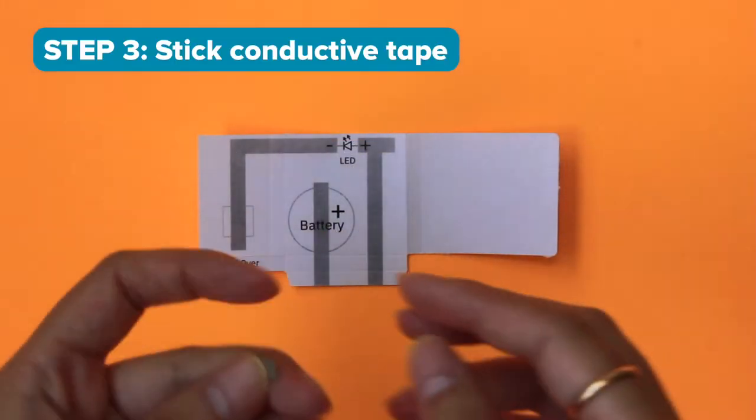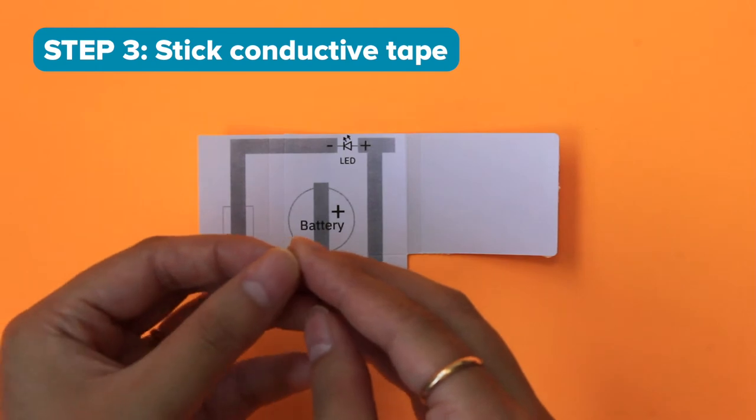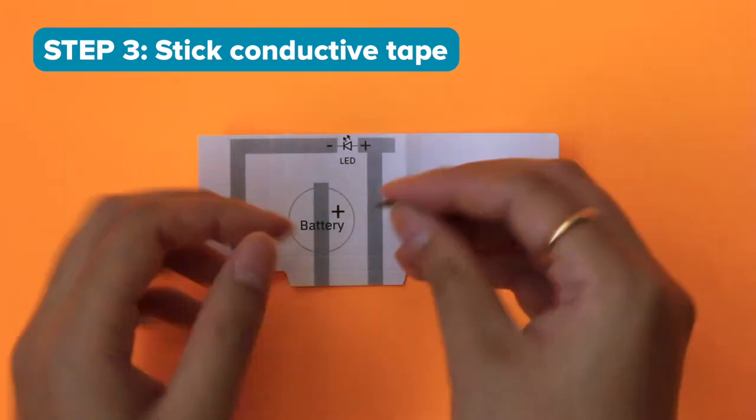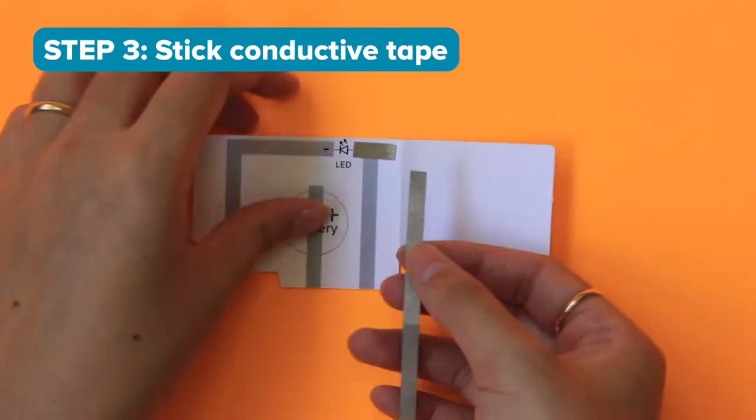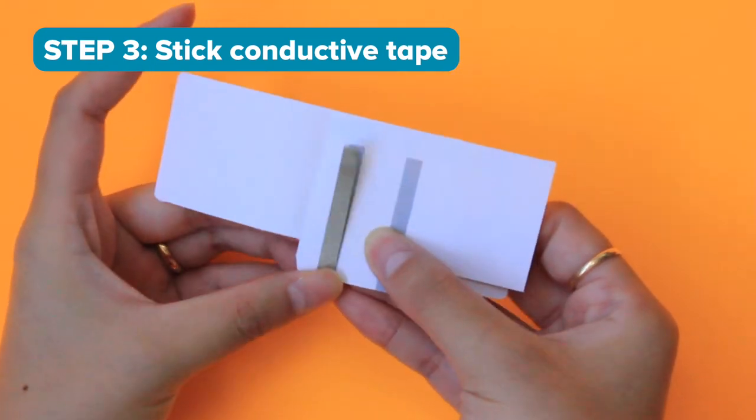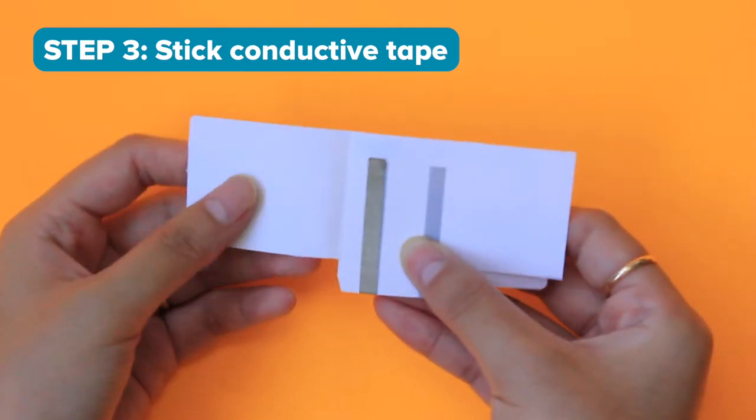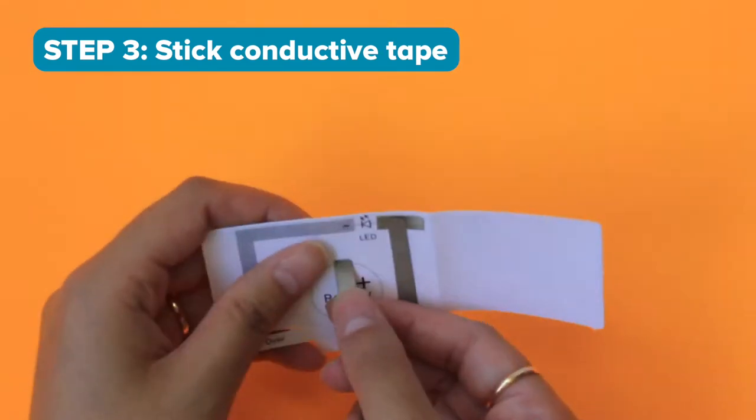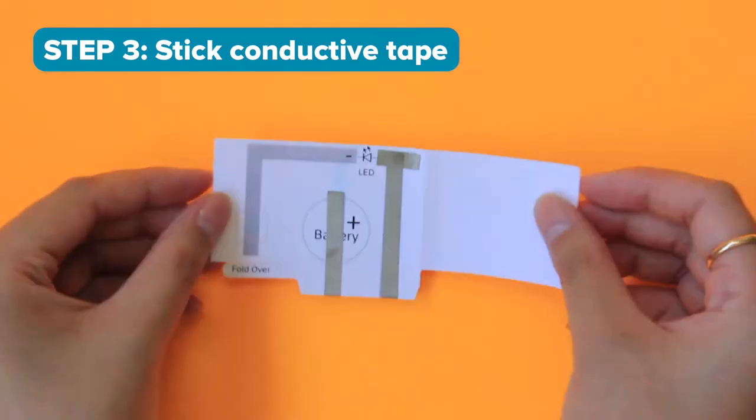Step 3. Stick the conductive tape onto the gray circuit lines as shown. Remember that this line continues on the other side of your template. Remember that this line also continues on the other side.